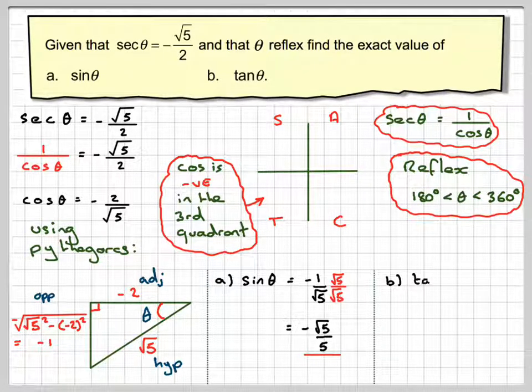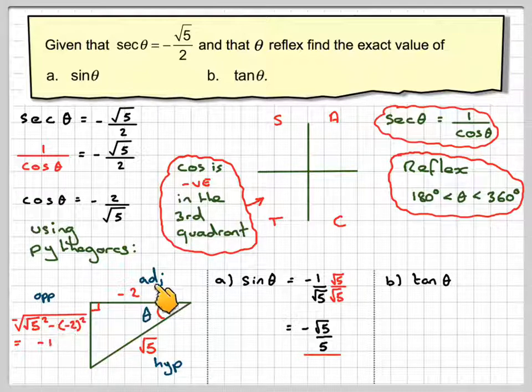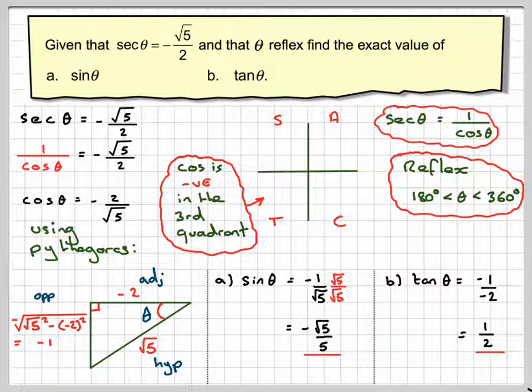Tan θ is equal to opposite over adjacent, so that's going to be minus 1 over minus 2, which gives me that tan θ is a half.